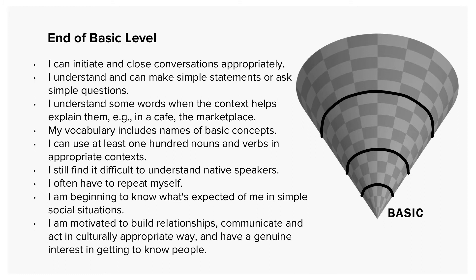They might describe their ability like this: I can initiate and close conversations appropriately. I understand and can make simple statements or ask simple questions. I understand some words when context helps explain them — for example, in a café or a marketplace. My vocabulary includes names of basic concepts. I can use at least 100 nouns and verbs in appropriate contexts. I still find it difficult to understand native speakers and often have to repeat myself. I am beginning to know what's expected of me in simple social situations. I am motivated to build relationships, communicate and act in culturally appropriate ways, and have a genuine interest in getting to know people.